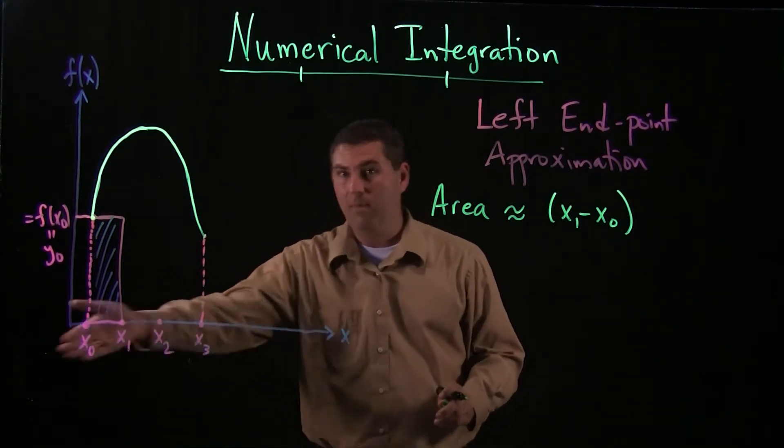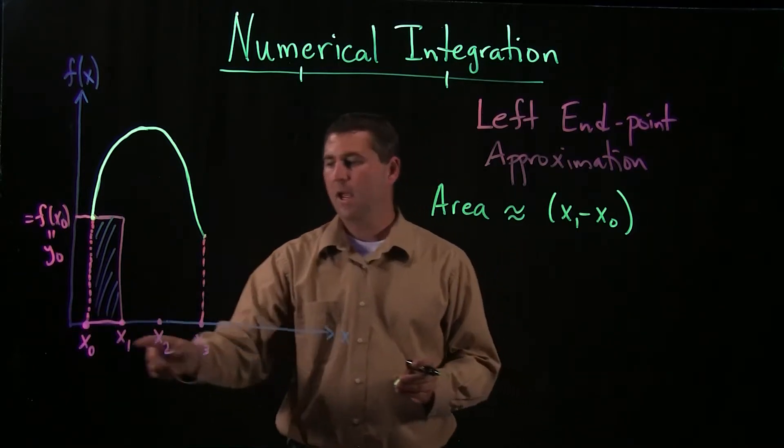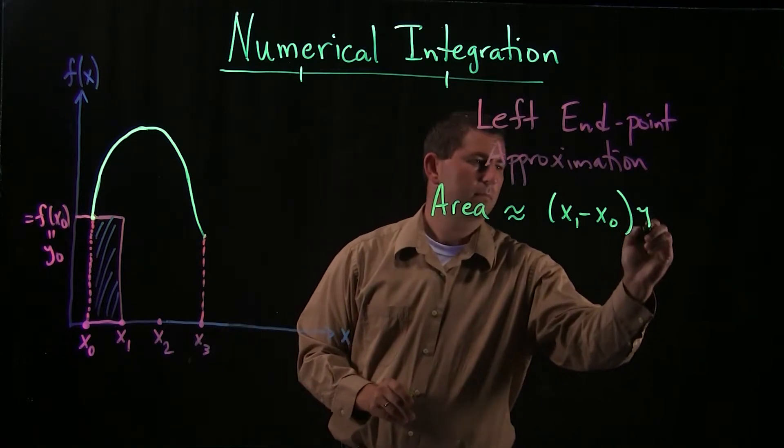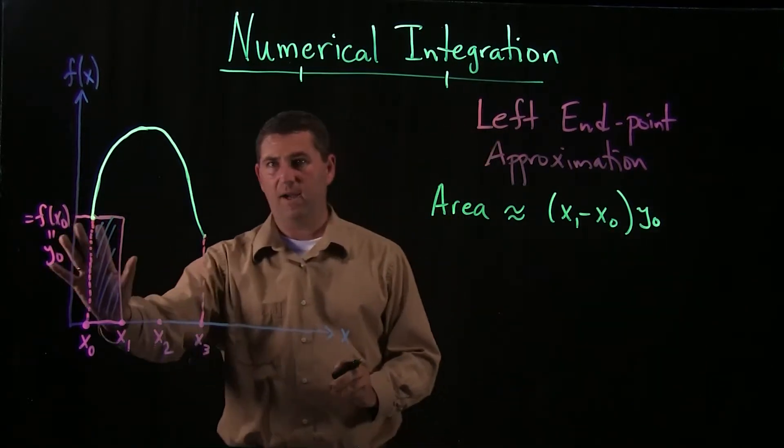Imagine this was a 2 and a 4. How would you find the length? You do 4 minus 2. That's all I've done here. Times the height, and the height is the y0.